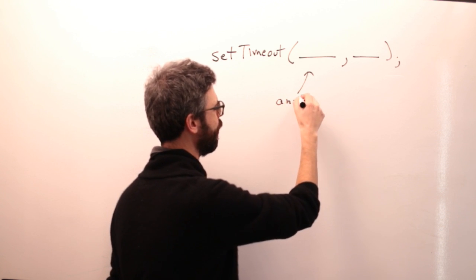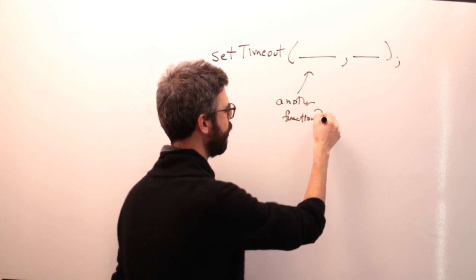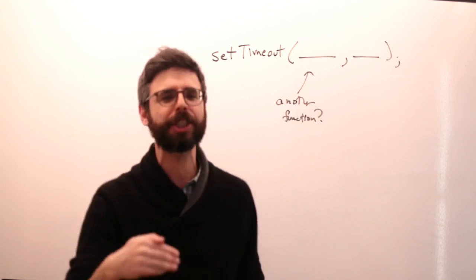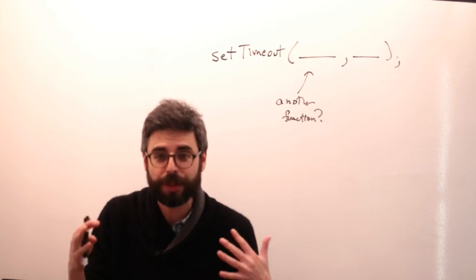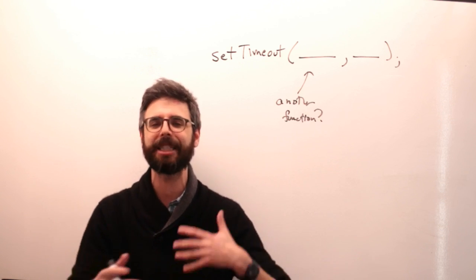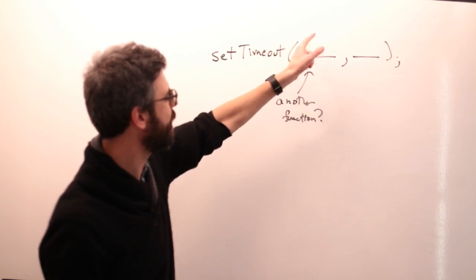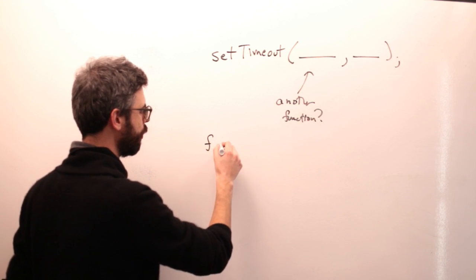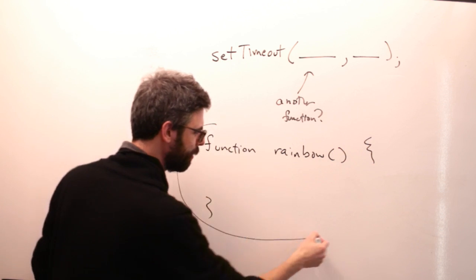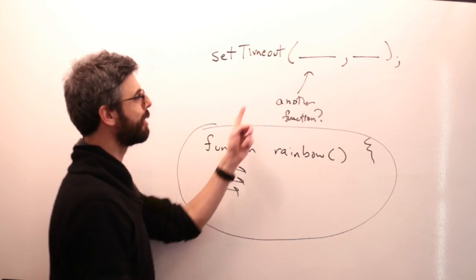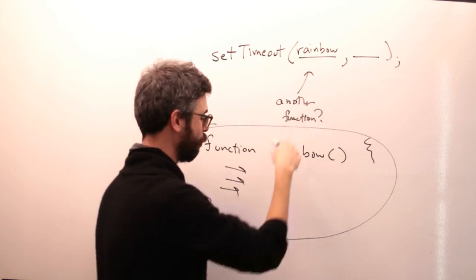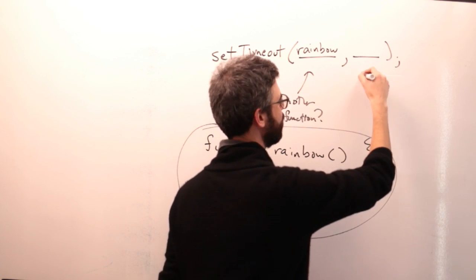The first argument is another function. If you've watched any of my videos before, or done any JavaScript programming, this idea of passing a function as an argument to another function isn't a new thing — it's very common. Functions in JavaScript are just variables, things you can declare, execute, and pass around. So what needs to go in here is a function — for example, I'm going to call this function 'rainbow'. The second argument is a moment of time.